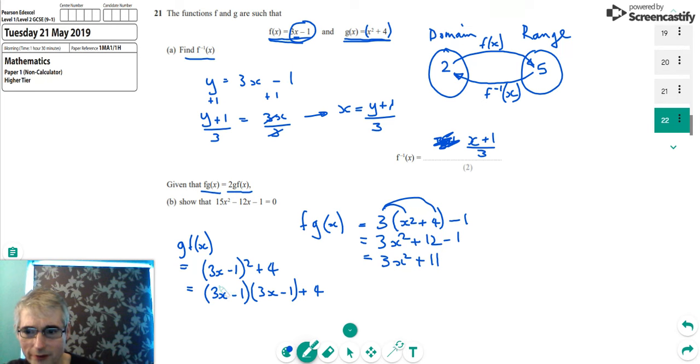And if I multiply these out in the standard way, I get 3x times 3x is 9x squared. 3x times minus 1 is minus 3x. Minus 1 times 3x is minus 3x again. And minus 1 times minus 1 is plus 1. And we've still got the plus 4 there. So that's going to give me 9x squared minus 6x plus 5.